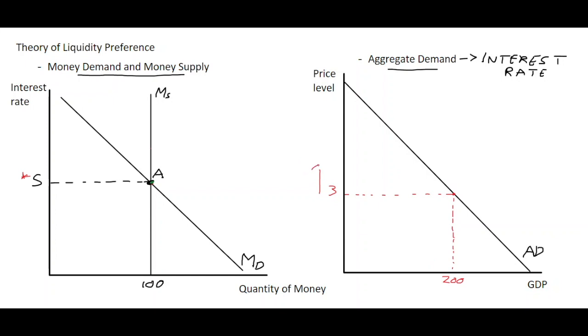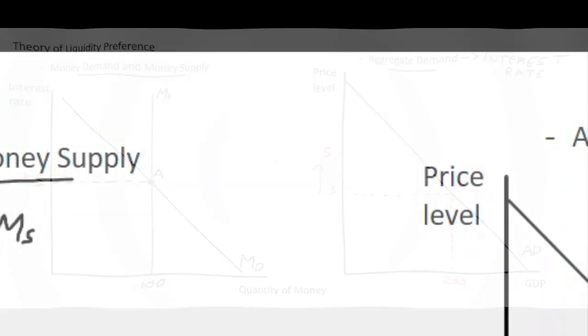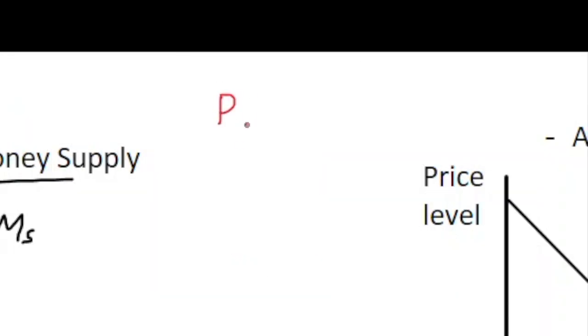Okay, so what we see in this case is if we take the example of a price increase. So if there's an increase in the price in the economy, let's say up to five, that increase causes two things. What it causes initially is when the price level goes up, the money demand in the economy tends to rise as well.